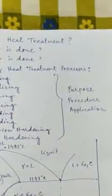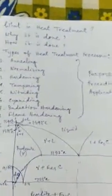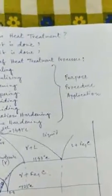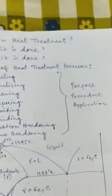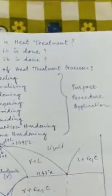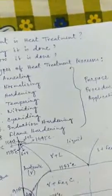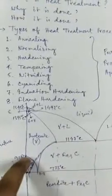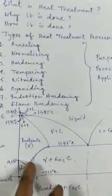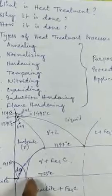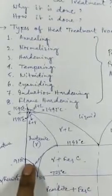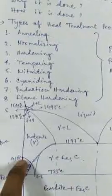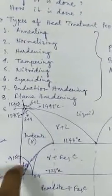First is the annealing process. Annealing is one of the most important and widely used operations in the heat treatment of iron and steel. It is a softening process. Annealing is done by heating the steel 30 to 50 degrees centigrade above the upper critical temperature. For example, at 0.8 percent carbon the upper critical temperature is 723 degrees, and at zero percent carbon it is approximately 910 degrees centigrade.